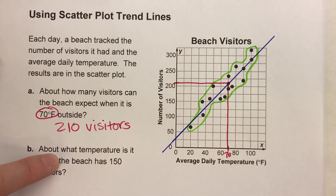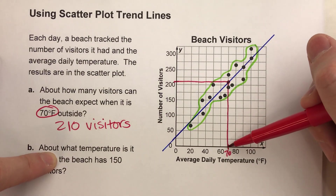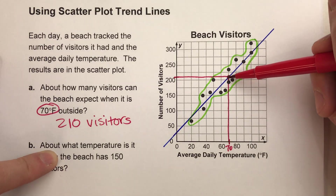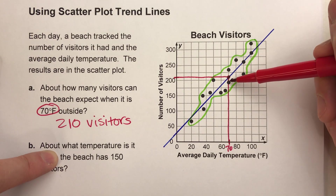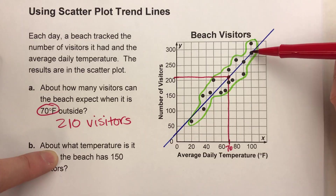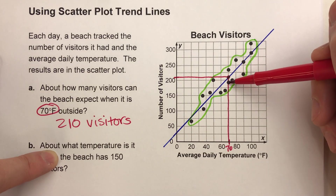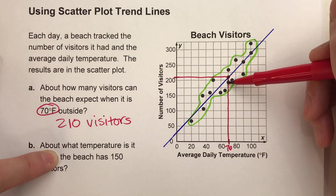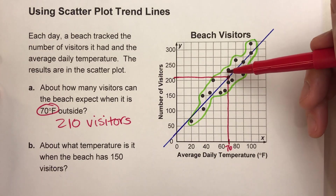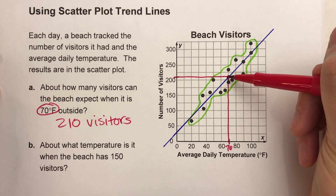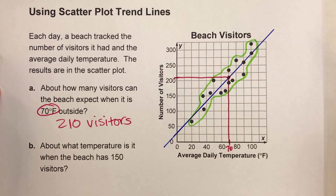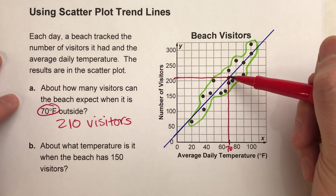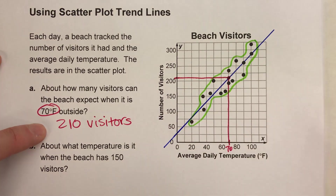Notice what we did — we just went from 70 and went up until we hit the trend line. Don't get thrown off by the data points from our scatterplot; there are two different points that match up with 70 degrees Fahrenheit, but we're not using the data points, we're using the trend line. Because remember, that trend line represents the average of all the data points, and that's the one we're going to use to get our answer.